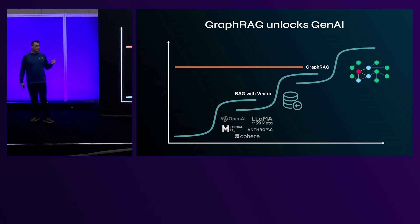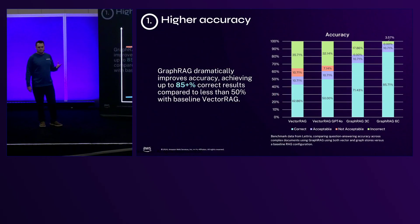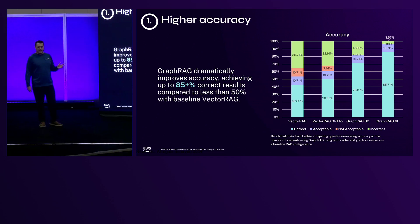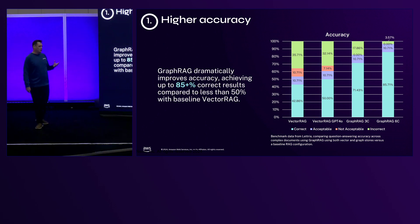RAG put a database on the path to the LLM. GraphRAG takes it to the next step, building upon these early steps. When you put a knowledge graph on the retrieval path, things get much better. Let's quickly talk about three concrete benefits of GraphRAG, starting with higher accuracy. And don't just take my word for it — there's an increasing amount of research being published that shows dramatic improvements when you use a GraphRAG-based approach compared to a baseline vector-based approach.